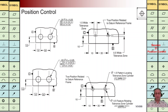At bottom left we are going to have the same situation, but we have this composite FCF. At top we can see we are going to have a diameter symbol — the diameter of this cylinder should be one and a half, and it should be perpendicular to A.